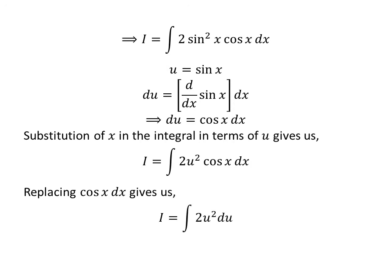Now, let us replace cosine of x times differential of x by differential of u. So I is equal to the integral of 2 times square of u with respect to u.